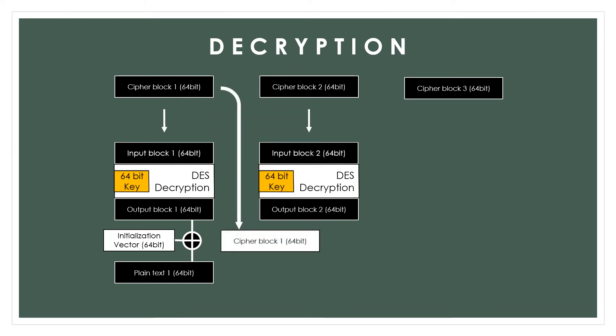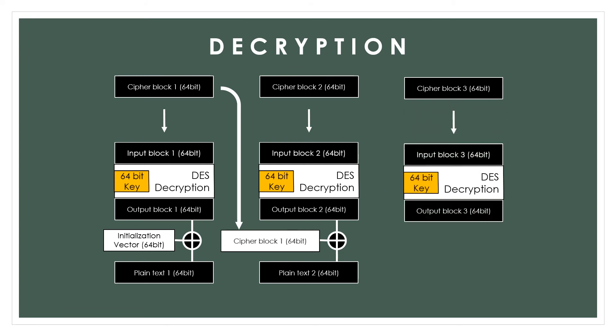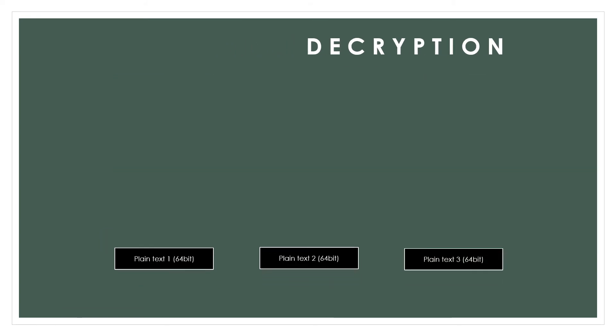For the following block of cipher text, the block is first decrypted using DES with the same key, and then XORed with the cipher text block from the previous block. This step is repeated for the remaining blocks of cipher text. However, if padding was used during encryption, the padding is removed only when the last block of cipher text is decrypted into plain text.